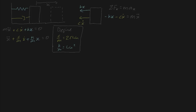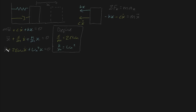Using these substitutions, we can simplify the expression and write the equation as x-double-dot plus 2ζωₙ*x-dot plus ωₙ²*x equals zero. It may seem arbitrary why we chose 2ζωₙ and ωₙ², but you'll understand why when we get into the characteristic equation, which I'll be covering very soon — so bear with me.